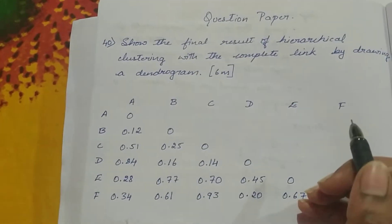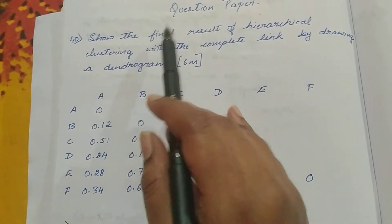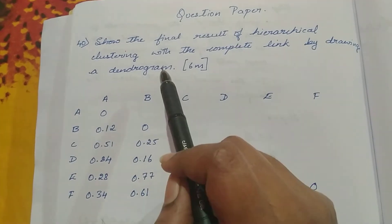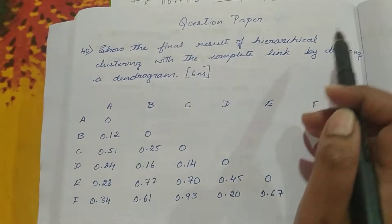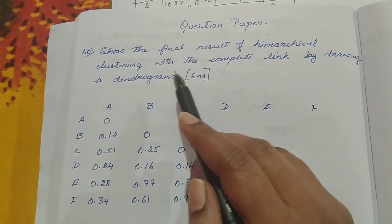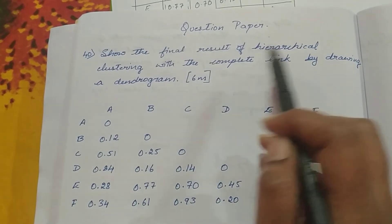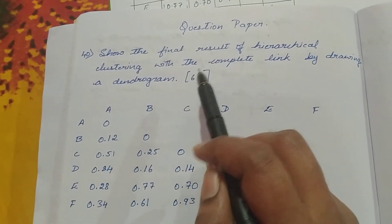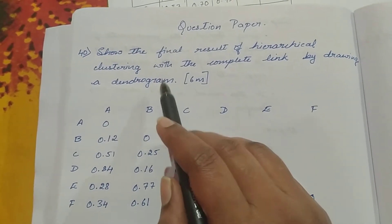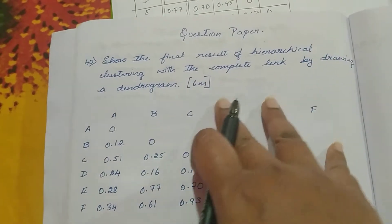The fortieth question is: show the final result of hierarchical clustering with the complete link by drawing a dendogram. We have to construct hierarchical clustering with the complete link — that is one of the methods in hierarchical clustering — and then show the result in the form of a dendogram.